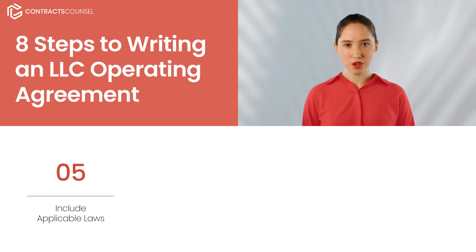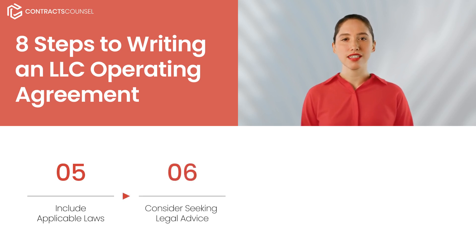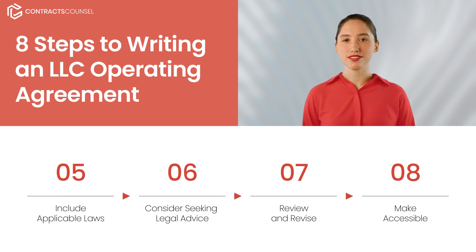5. Be sure to incorporate any applicable laws and regulations that may be specific to your state or industry. Note this may require research. 6. If you are unsure about anything, consider using Contracts Council's platform to seek advice from an experienced business lawyer. 7. Review and revise the agreement to make the language clearer and confirm you have included everything needed. 8. Create a single document to serve as your LLC operating agreement and ensure all members have access to it.